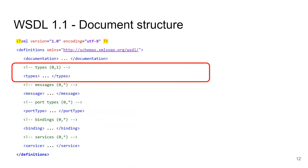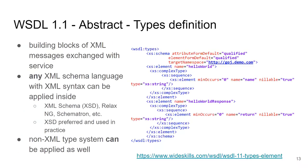That was the root of the WSDL file. Moving on to Types: the Types section contains definitions of elements and complex types used to represent messages. For instance, here within the Types section we have an XML schema that creates 'helloWorld' and 'helloWorldResponse' elements and defines them as XML schema allows you to do.